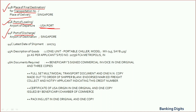Field 44D refers to the latest date of shipment. The date of shipment evidenced in the transport document should be on or before this date — if the shipment is on this date, the document is still compliant. However, the shipment date cannot be after this date.